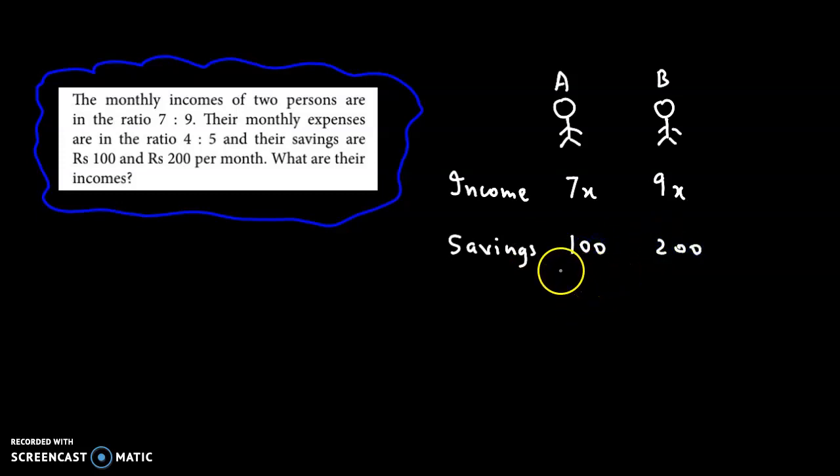Now if we subtract income and savings, we will obtain the expenses. So the expenses would be 7x minus 100 for A and 9x minus 200 for B, and the expense ratio is 4 to 5.